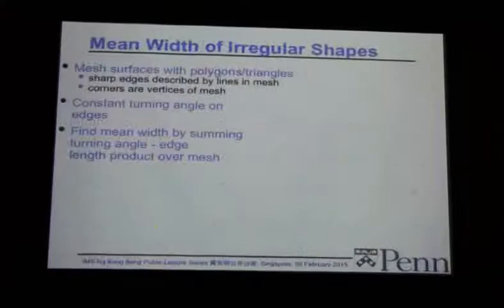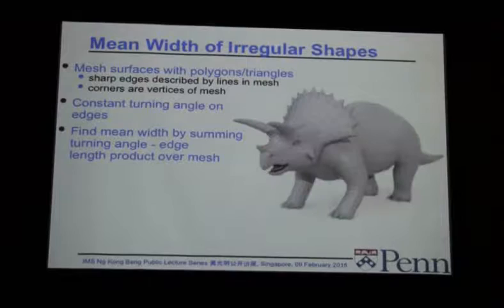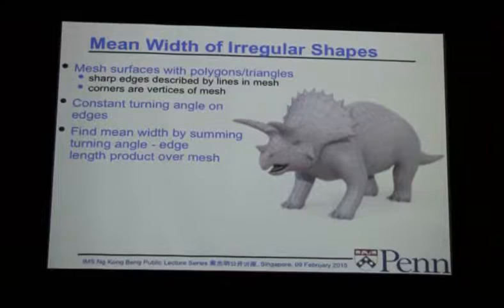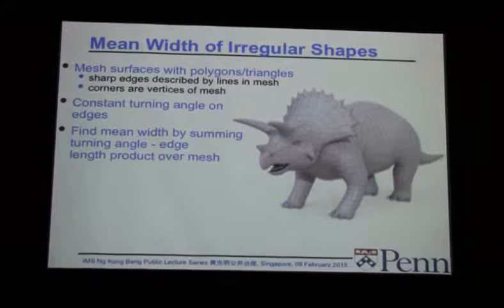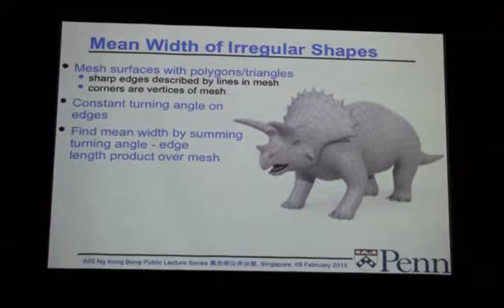What is the mean width of a triceratops? Trivial — you just grid up the triceratops, look at all those little edges, and measure the sum of the length of each edge times the turning angle across it. That gives the mean width of a triceratops. You can take any shape and calculate its mean width just by putting a mesh around it. Any object where the mean width coefficient is an integer is one that can be repeated to tile space.